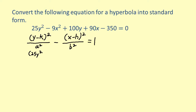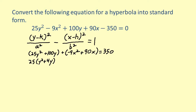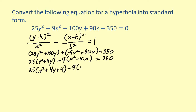Begin by moving the constant to the right side of the equation and grouping together like terms. The square can be completed on the second binomial by adding 25. Because constants were added to the equation on the left side, these same constants must be added to the right side to keep the equation balanced.